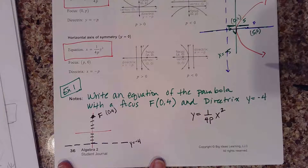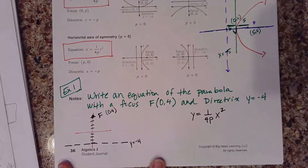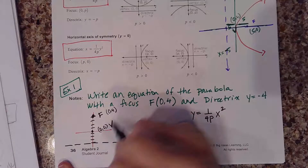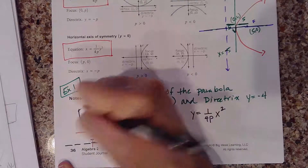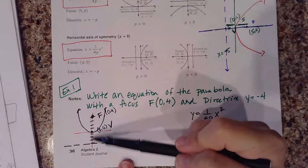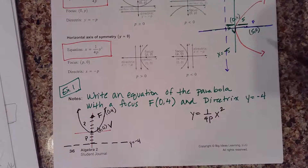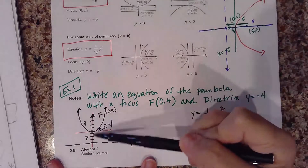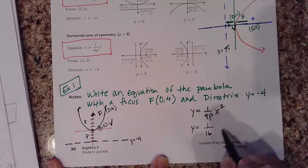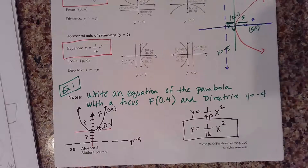So my equation is going to be the opening up-and-down form. I'm going to steal this equation: y equals 1 over 4p times x squared. I'm not going to make you memorize these formulas — they will be provided on any assessments. The vertex is smack dab in the middle: between 4 and negative 4 is (0, 0). So my p-value is a distance of 4, and y equals 1 over 4 times 4, which is 1/16. So that's the equation of your parabola.